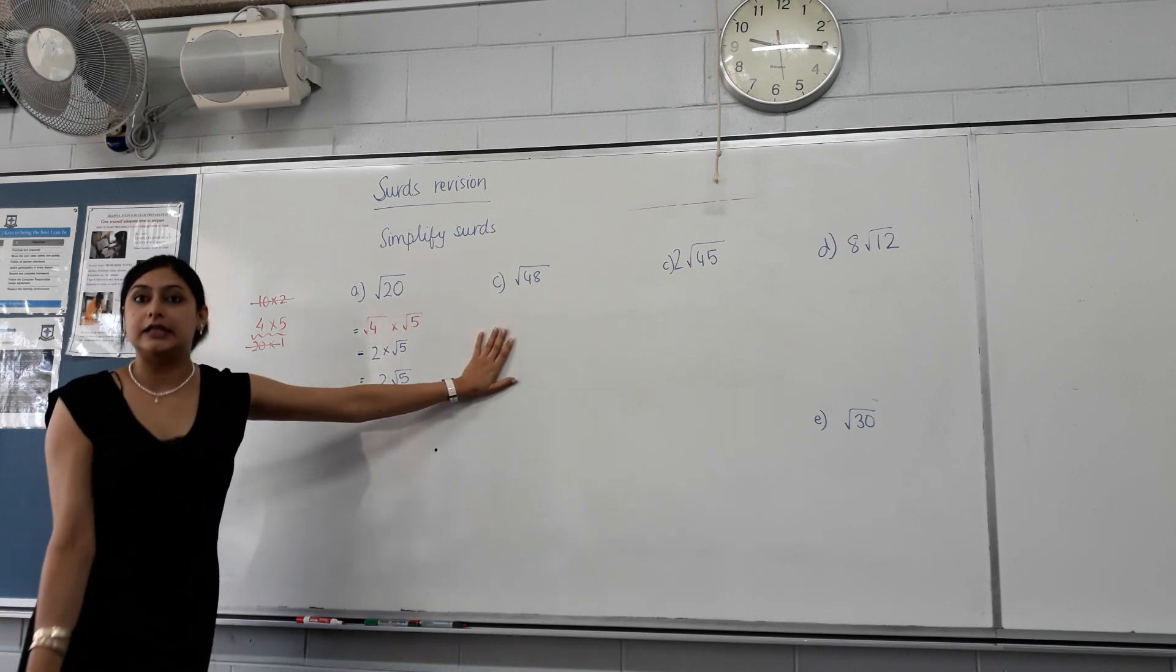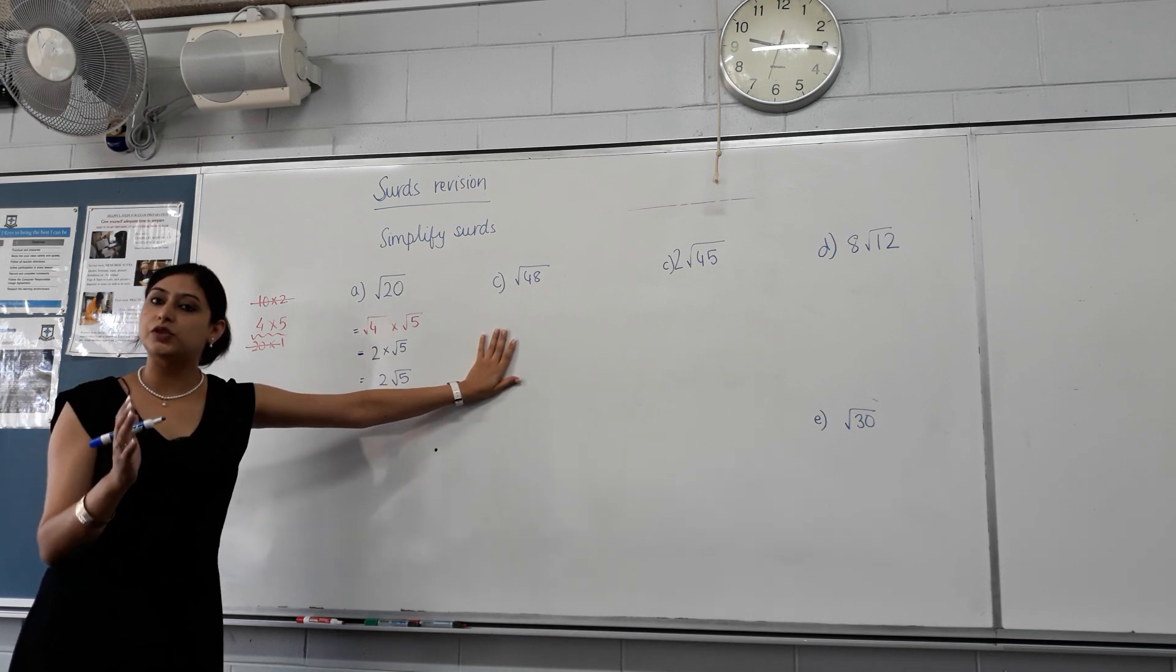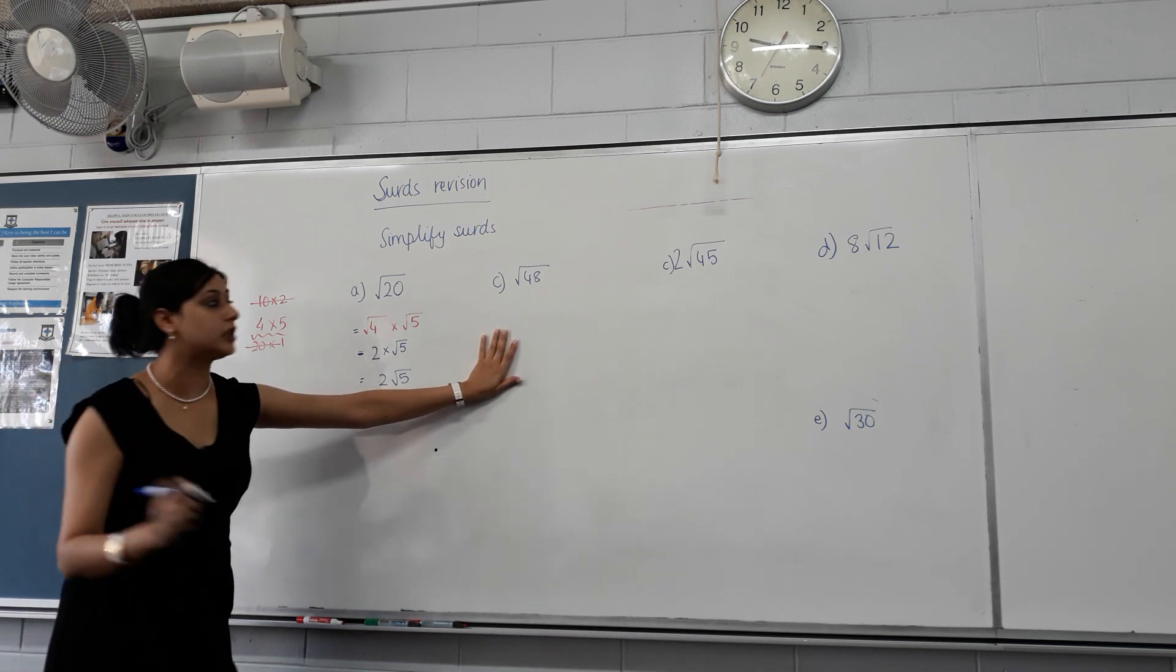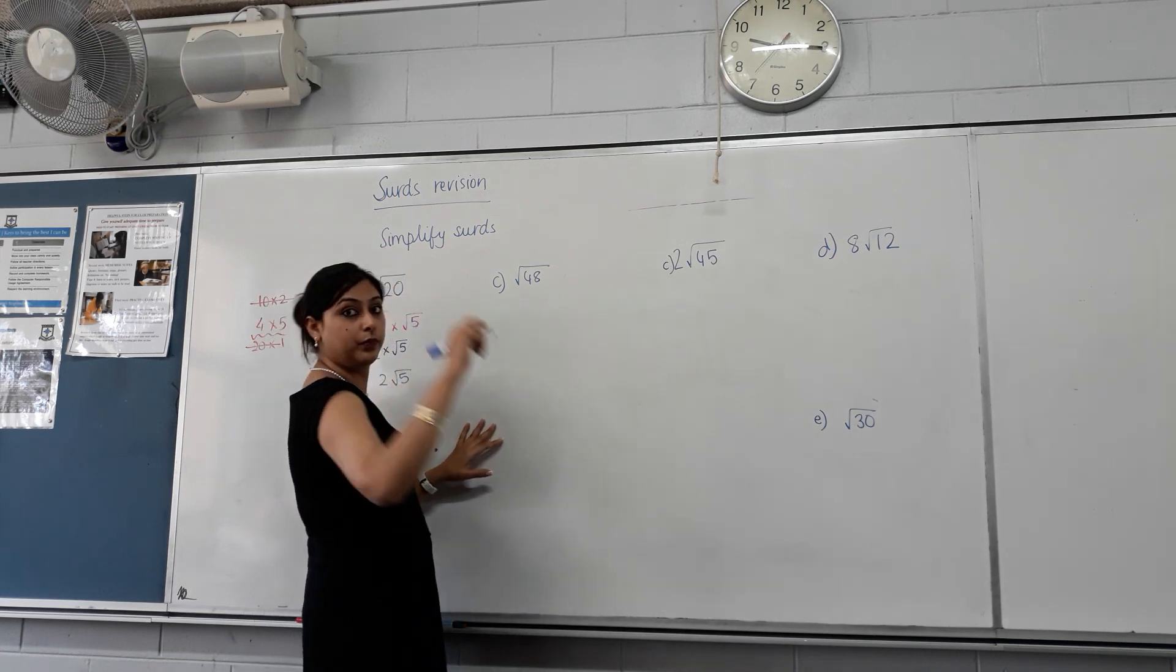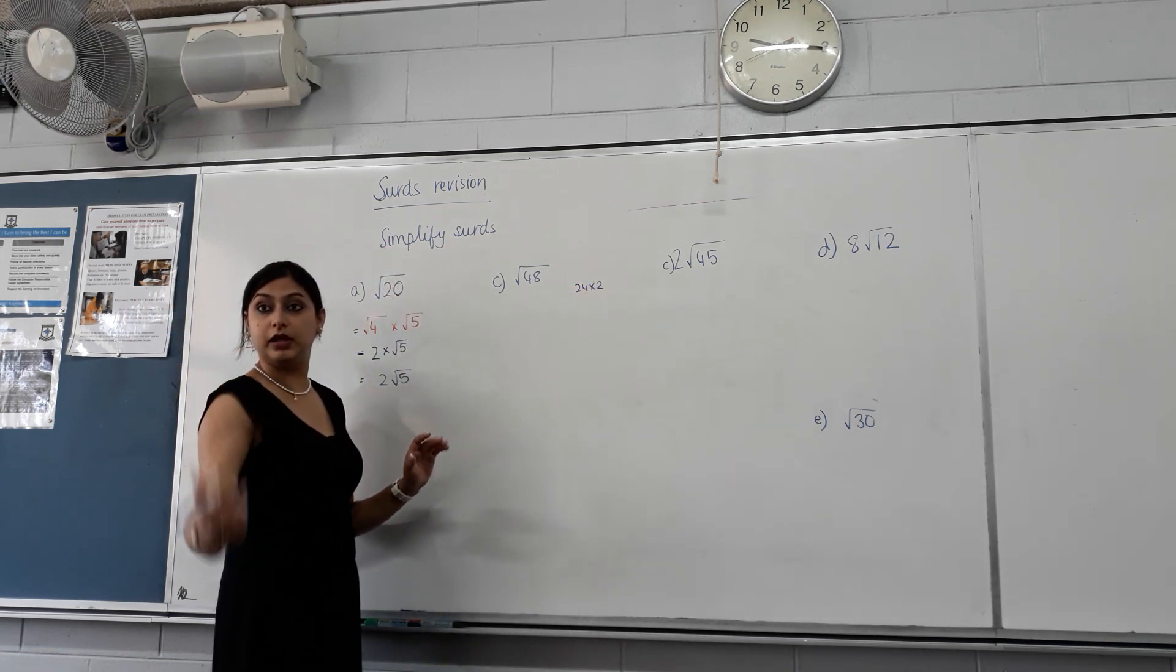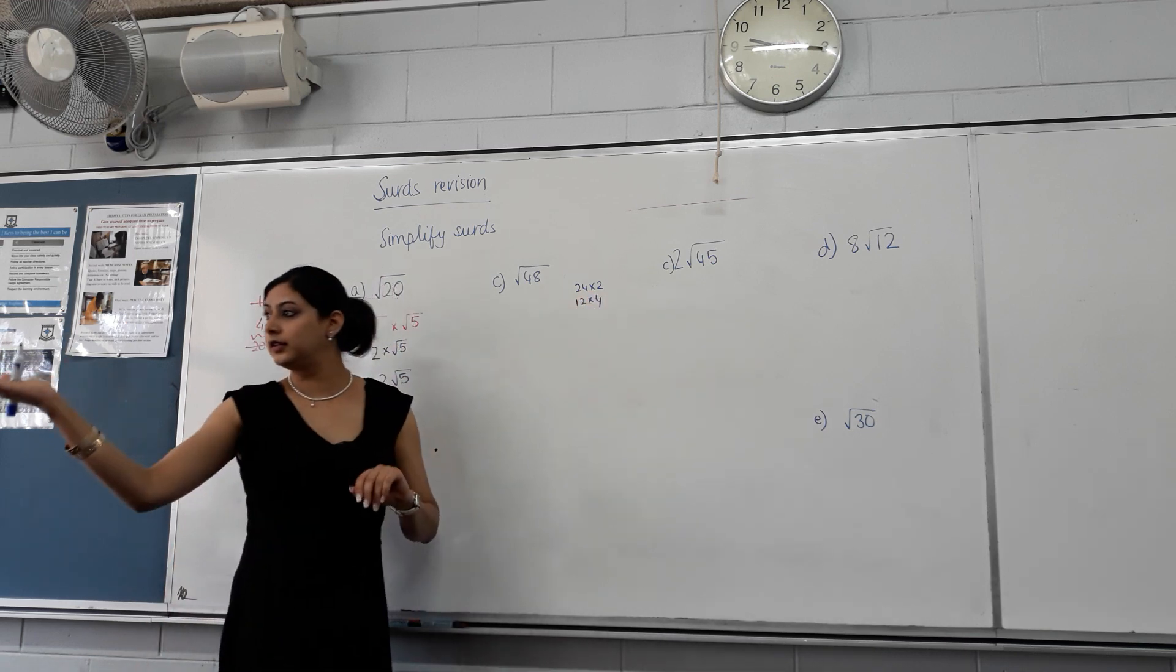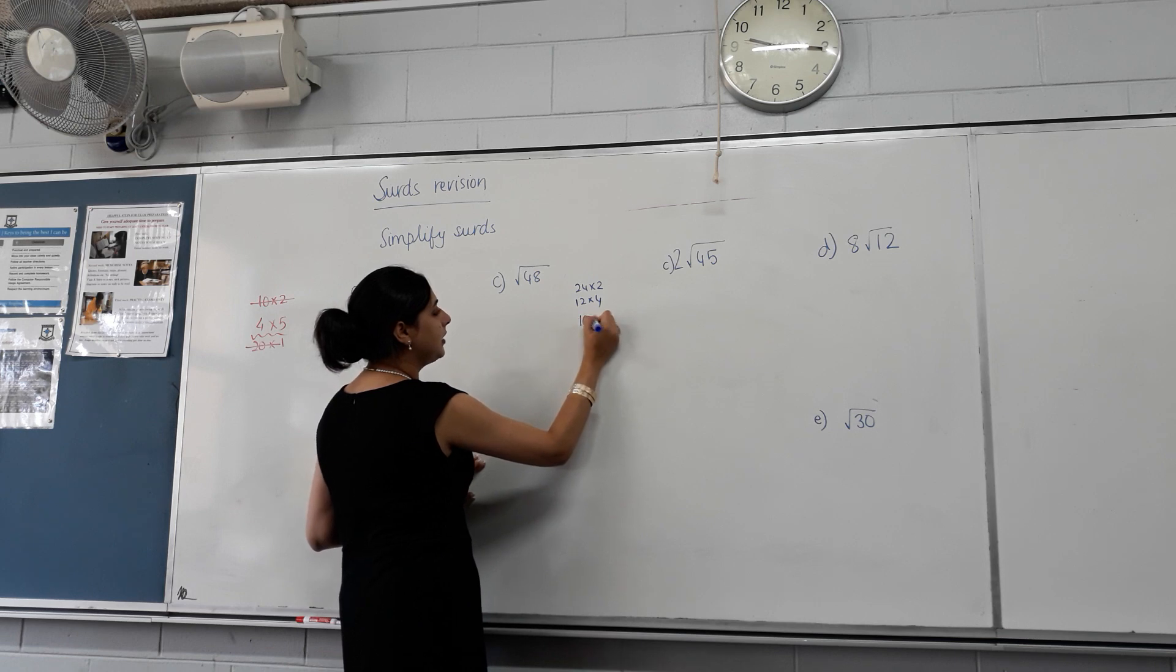Root 48. Again, factors of 48, factor pairs - two numbers that times together to give us 48. So we're gonna start with 24 times 2. Another possible combination? 12 times 4. Another? 16 times 3.